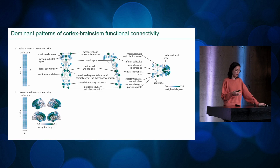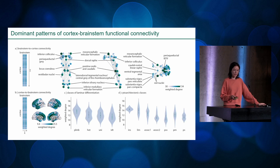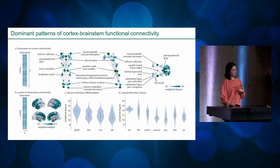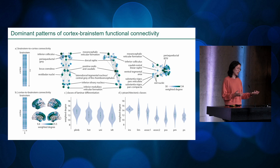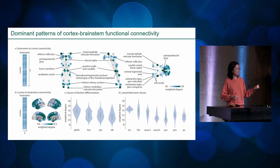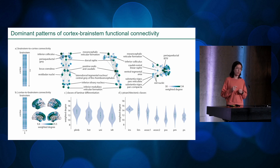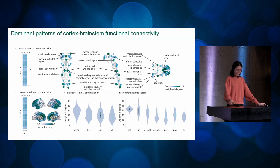On the flip side, the cortical regions most functionally connected to the brainstem follow a nice anterior-posterior gradient, which aligns well with cytoarchitectonic classes and laminar differentiation. This is likely about the underlying structure, visible both in diffusion-weighted imaging from anterior brain regions to the brainstem and in tract-tracing projections of individual neurons from anterior limbic regions down to the brainstem.